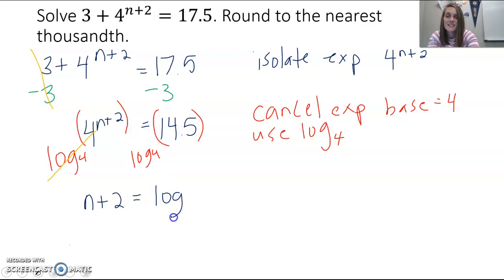On the right side it's log base 4 of 14.5. There's nothing you can do about that. However, we just said that we can round to the nearest thousandth. We don't have to worry about having exact answers.